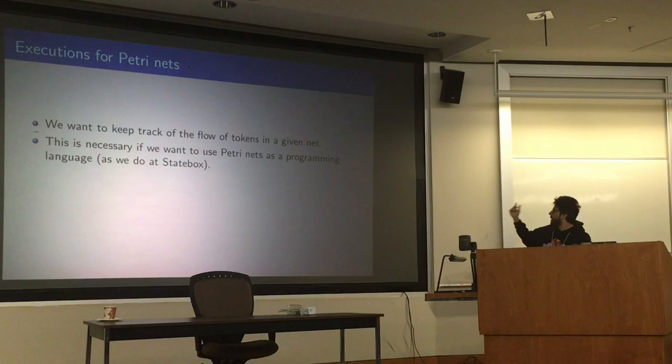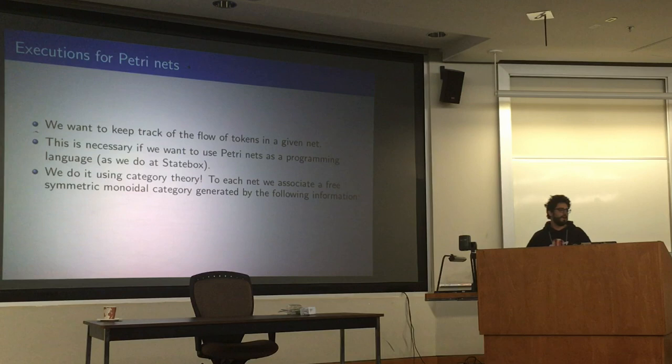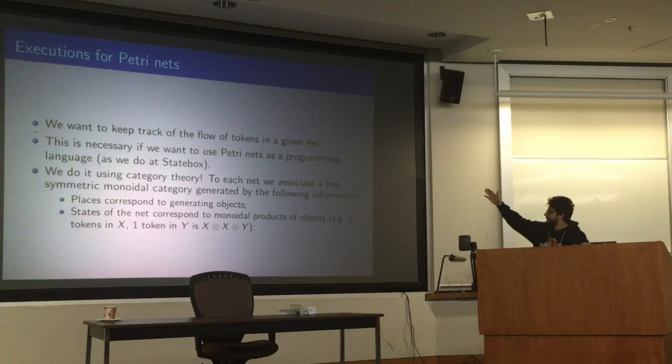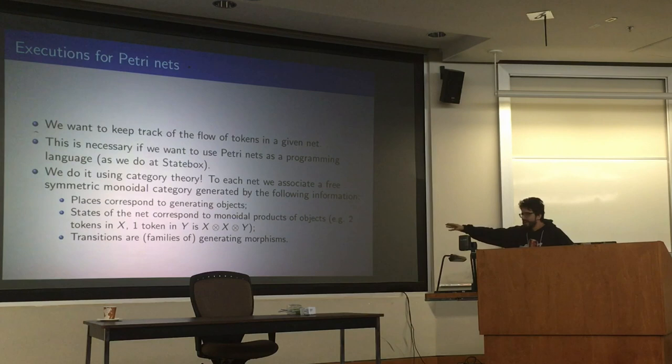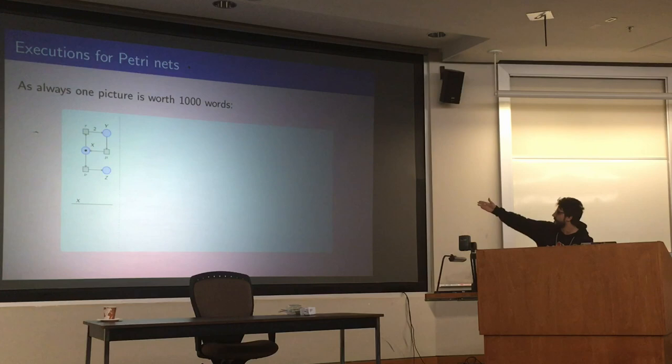So the way we do it is using category theory. This is nothing new. This is being done by Vladimir Sassone and other people. But the idea is that to each Petri net you can associate a symmetric monoidal category where places are generating objects, states of the net, so distributions of tokens become monoidal products of these objects, and transitions become families of generating morphisms. Families is because when you do it in practice there is a lot of bookkeeping to do, but intuitively this is the idea.